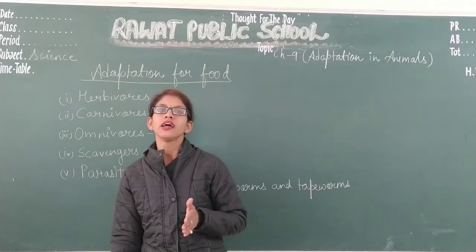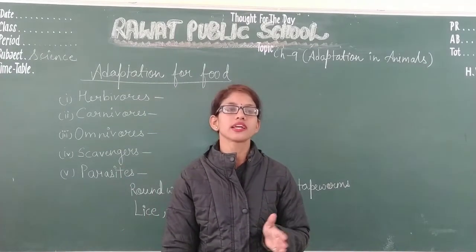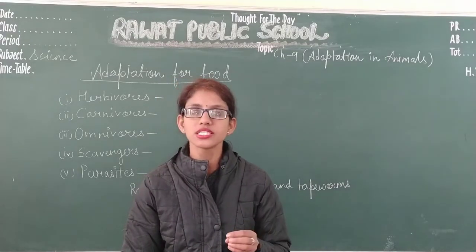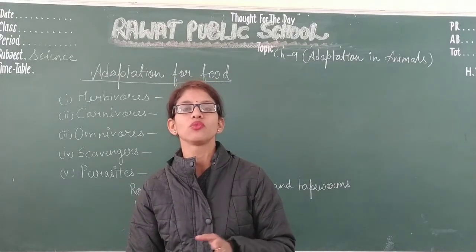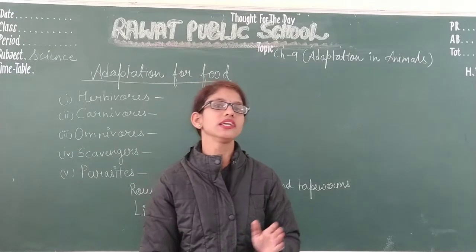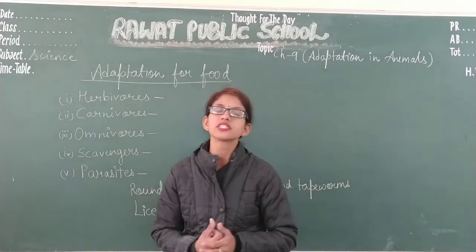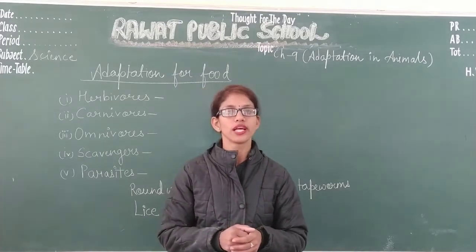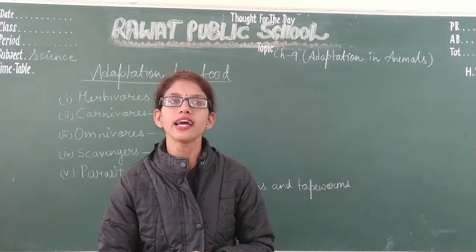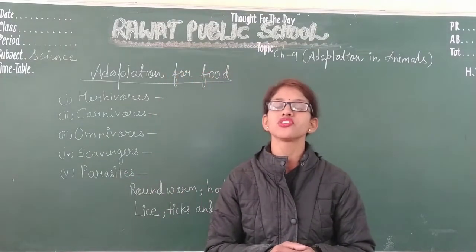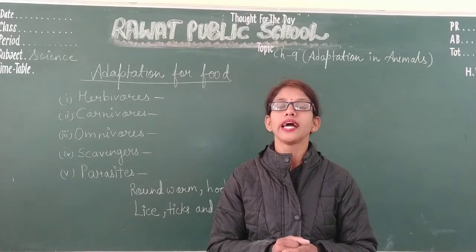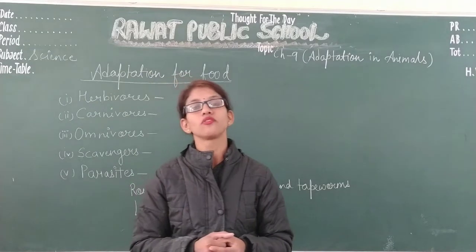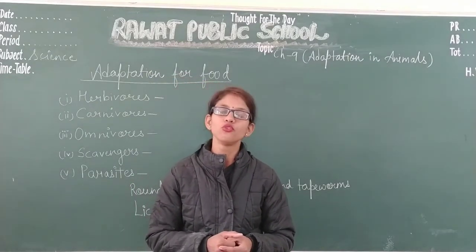The terrestrial habitat is again classified into 3 types: the animals that live in polar regions, the animals that live on mountains, and the animals that live in the desert. We also discussed specific processes known as hibernation and estivation. Hibernation is the long winter sleep followed by animals to face the conditions of scarcity of food.